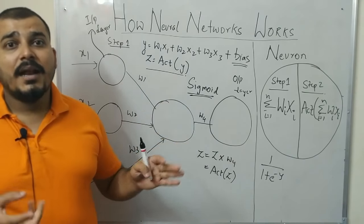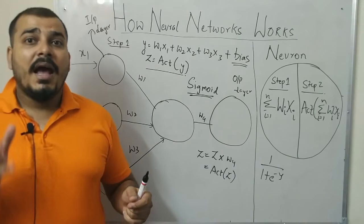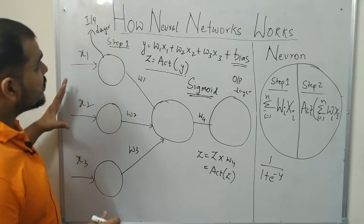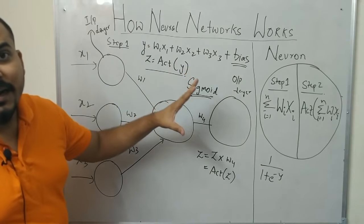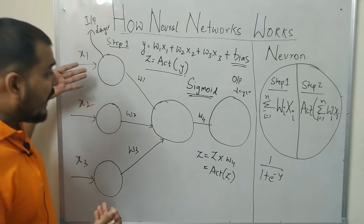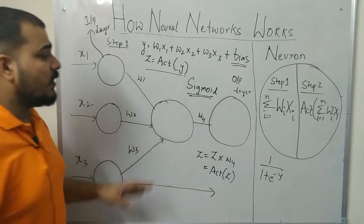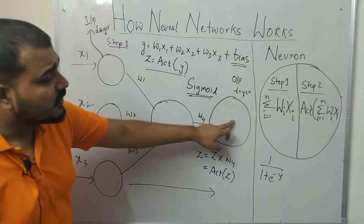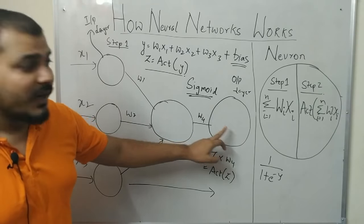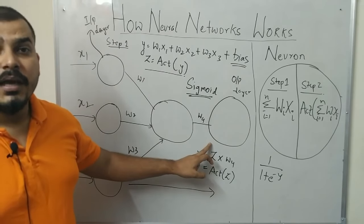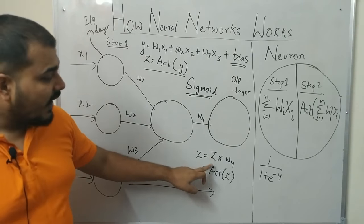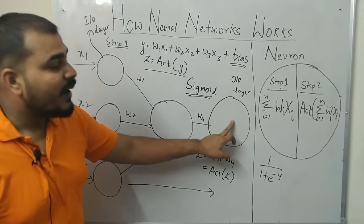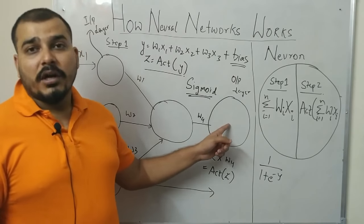I am going to take two classes discussing all the different types of activation functions and when to use them in different scenarios. This is how a neural network works, and this propagation is called forward propagation. After the output of this neuron, which we call Z, it gets passed to the output layer. Again a weight is assigned to that layer, it gets multiplied by Z, and an activation function is applied. For a classification problem, we get either 0 or 1 as the final output.